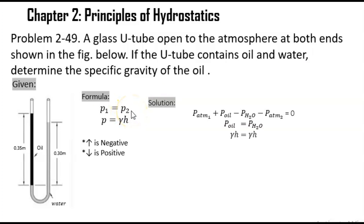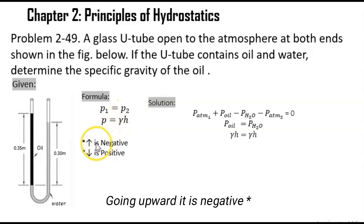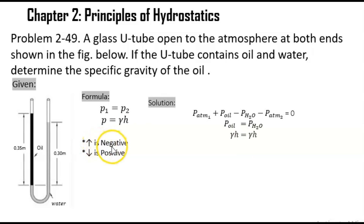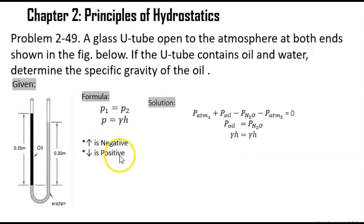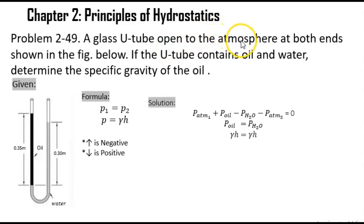We assume that if a pressure is pointing upward, it is negative, and if it is pointing downward, it is positive. Since in our problem, a glass U-tube is opened to the atmosphere, therefore it has atmospheric pressure at both ends.